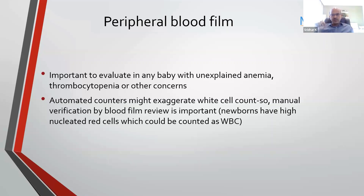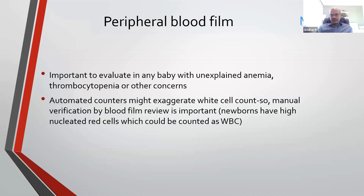Another important factor about the counts is that automated counters give you the initial full blood count report. The white cell count may be exaggerated in the newborn because there is already a high number of nucleated red blood cells, which are counted as white blood cells in error by the machines. So if you have a high white cell count, you can ask for a manual count so they can differentiate the nucleated RBCs and give a corrected count.